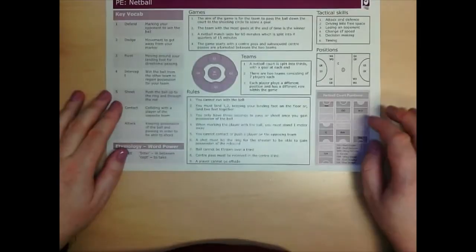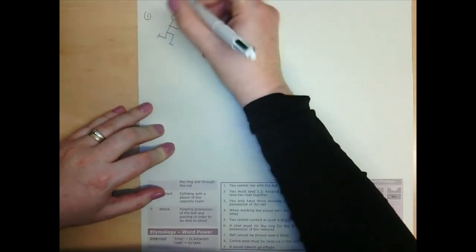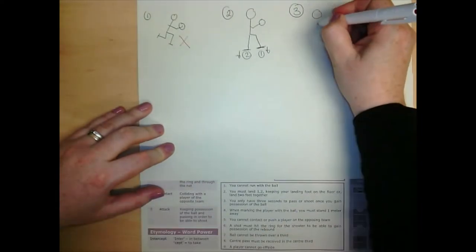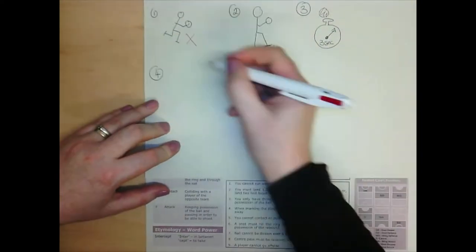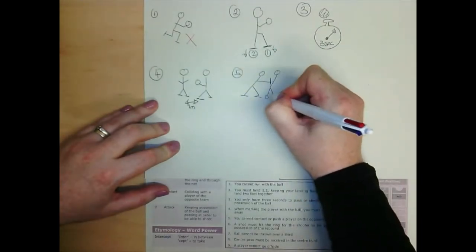To transform, you're going to take a section of your knowledge organiser written in words and turn it into pictures or diagrams. So first of all, pick your knowledge organiser, read the information really carefully, and pick the section that you are going to transform.